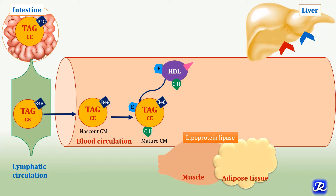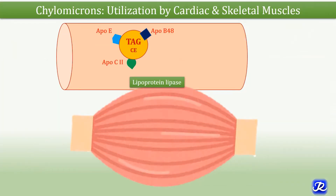This mature chylomicron is transported in the circulation and reaches peripheral tissues like muscle and adipose tissue. In the muscle capillary walls, the enzyme lipoprotein lipase is expressed, and the ApoC2 associated with the mature chylomicron activates this lipoprotein lipase. The hormone insulin can also activate lipoprotein lipase, which is why chylomicron metabolism is important in the well-fed condition.